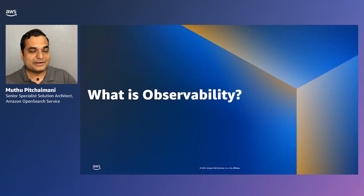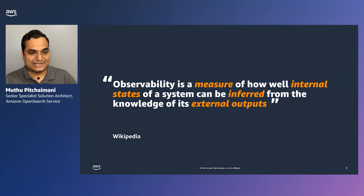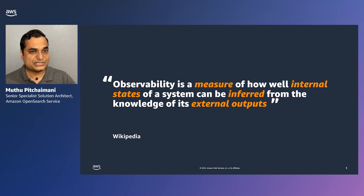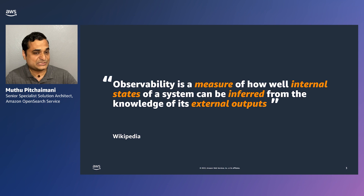It sounds like you've heard about observability a lot in the last few years, so let's look at what observability actually is. Observability, roughly defined, is a measure of how well you can infer the internal system by just looking at its external outputs.